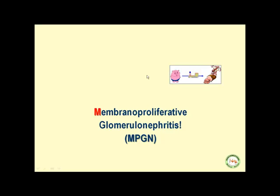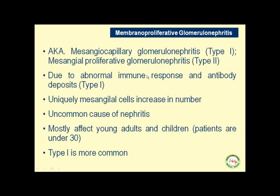Let's begin a quick review of the highlights of MPGN. There are two types: mesangiocapillary glomerulonephritis, also known as type 1, and mesangial proliferative glomerulonephritis, known as type 2.